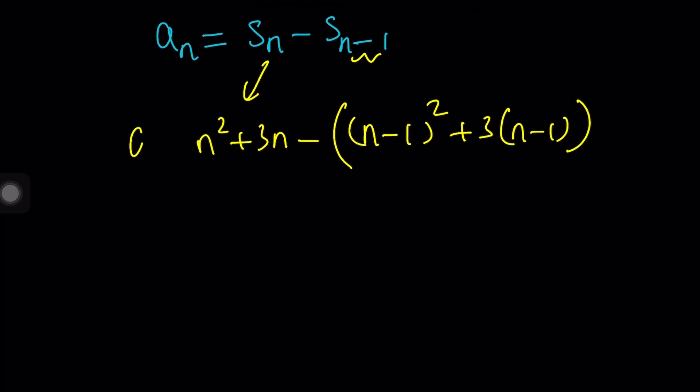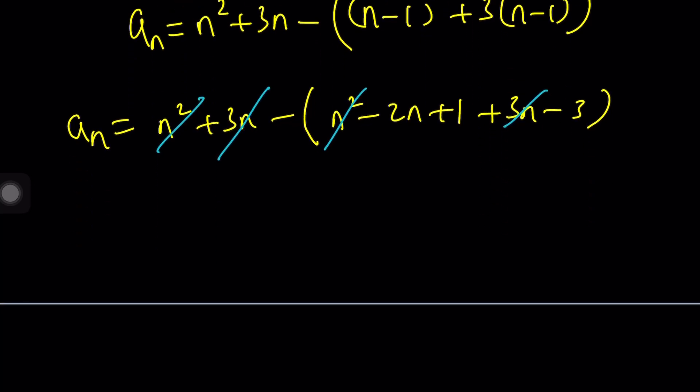Let's go ahead and expand this. This should give us a sub n, which is pretty quick, right? So we get n squared plus 3 n minus the quantity n squared minus 2 n plus 1 plus 3 n minus 3. Notice that n squared cancels out, 3 n cancels out. You get minus minus 2 n, which is 2 n, and then 1 minus 3 is negative 2, but negate it one more time, and you're going to get the answer as before. The exact same thing.